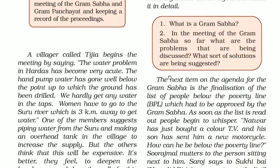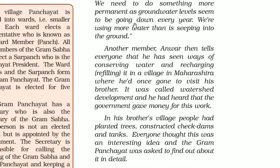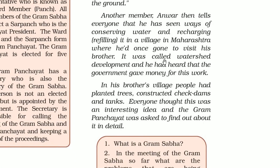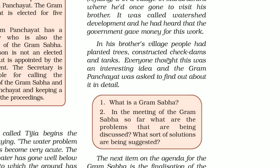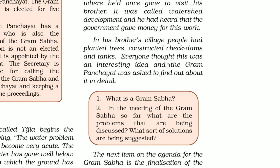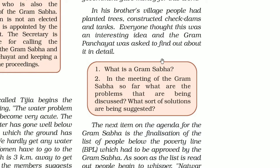Tijia says this is not enough — something more permanent is needed, as groundwater levels seem to be going down every year, meaning more water is being used than is seeping back into the ground. Another member, Anwar, shares that he has seen watershed development — conserving water and recharging it — in a village in Maharashtra, where people planted trees, constructed check dams and tanks, and the government gave money for this work. Everyone found this interesting and asked the Gram Panchayat to find out more details.